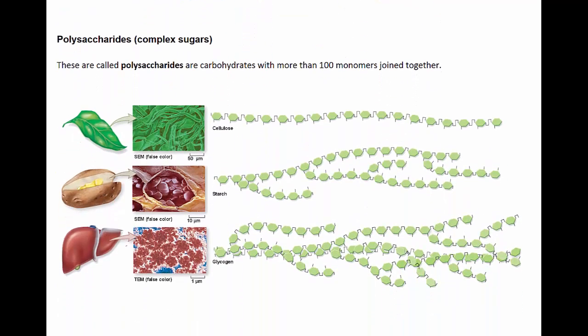Complex carbohydrates are those with more than 100 monomers joined together. These are called polysaccharides. Poly means many.